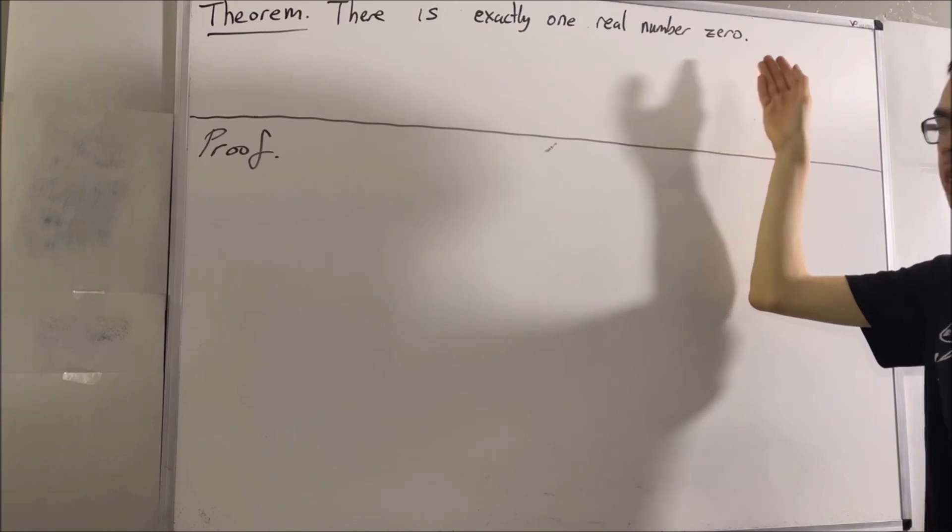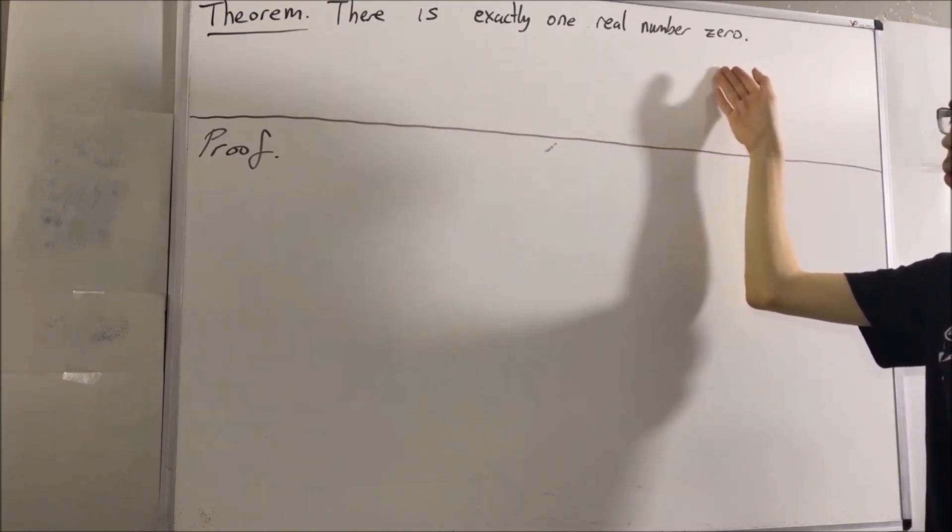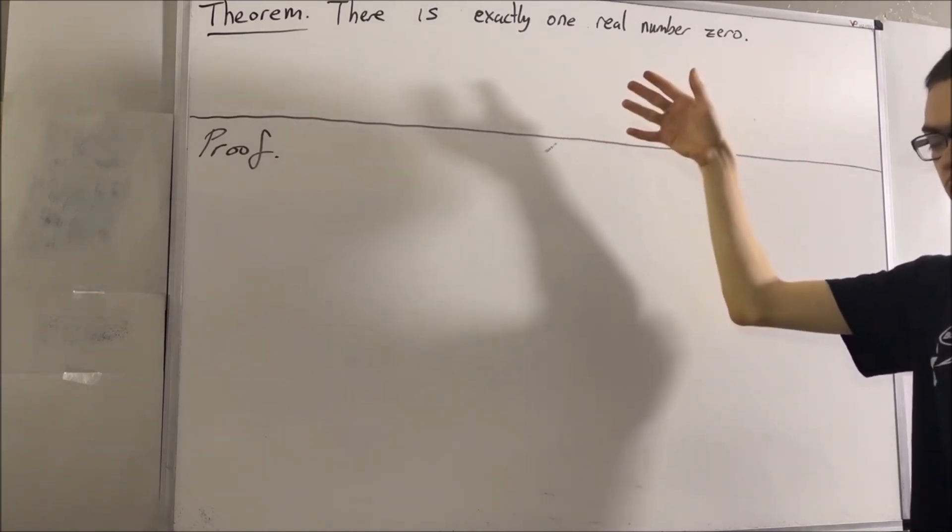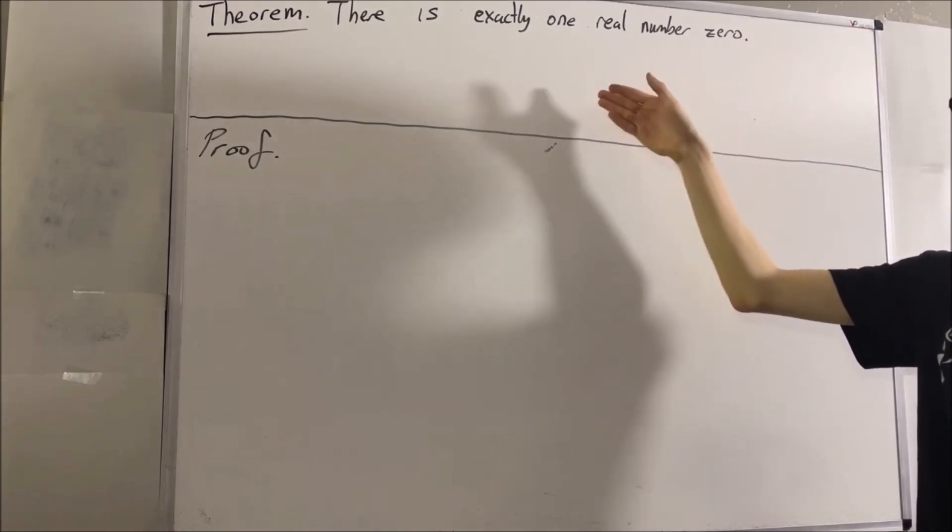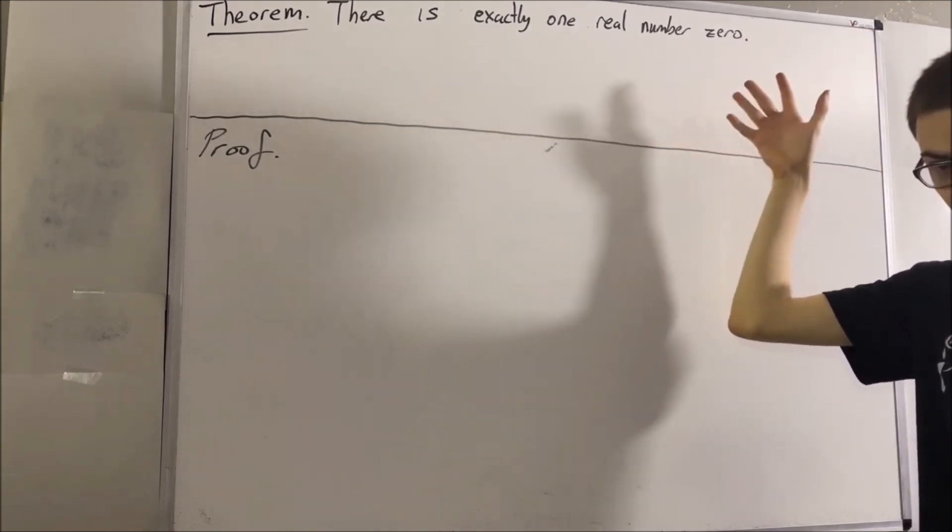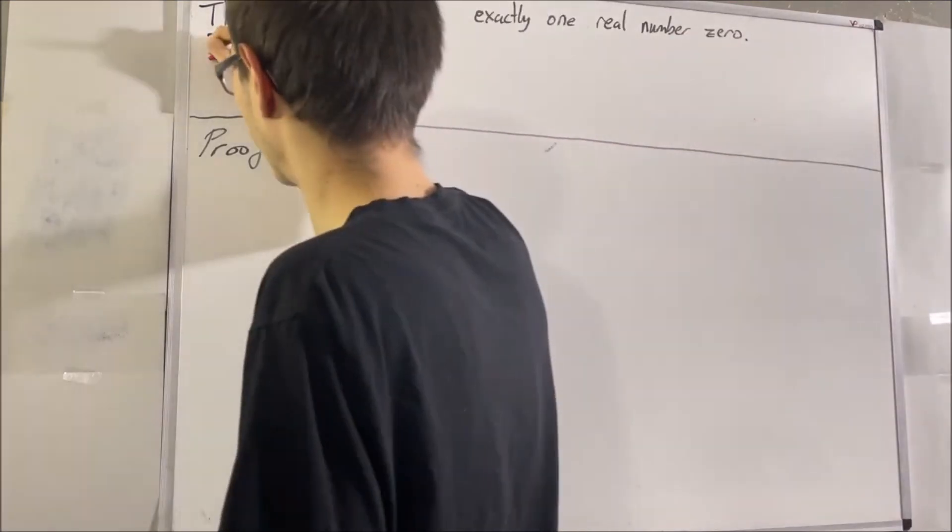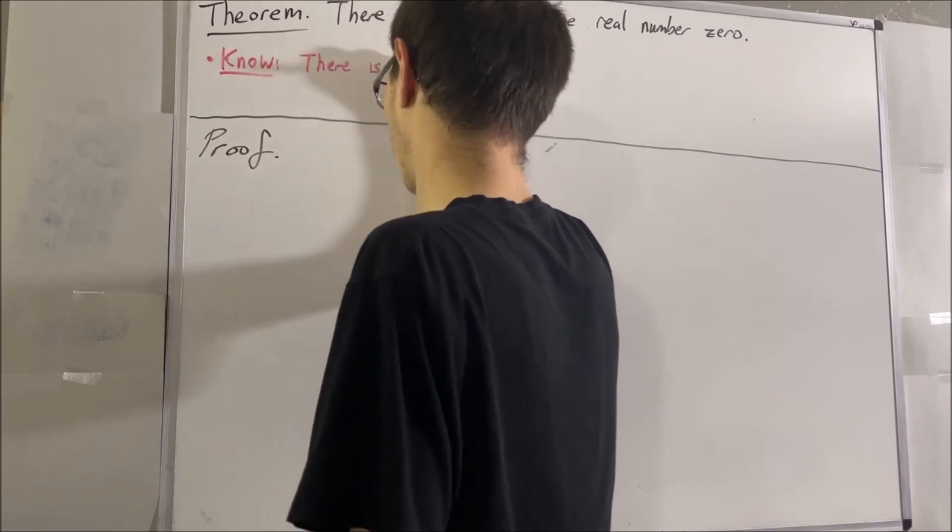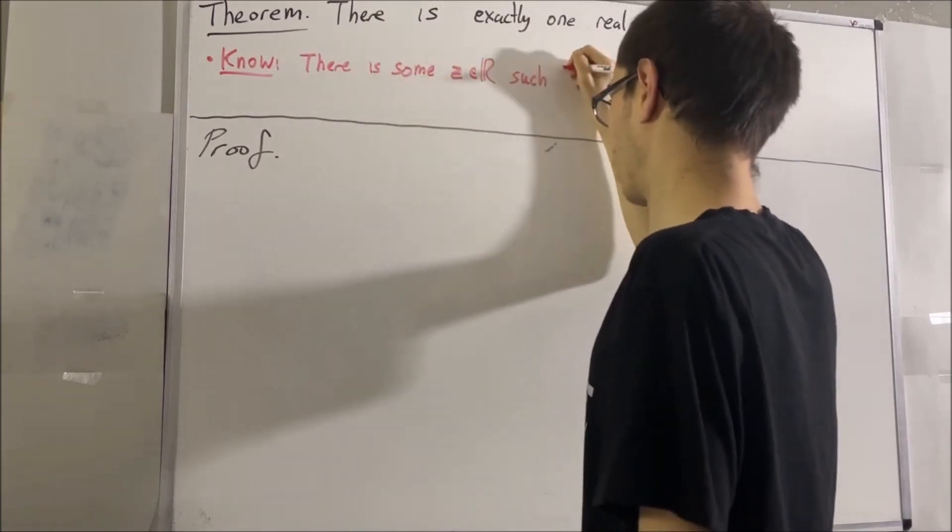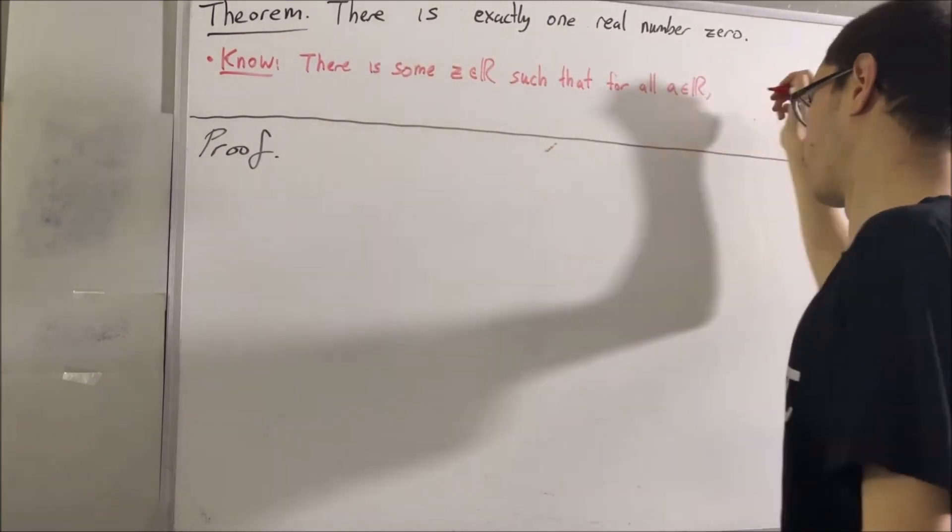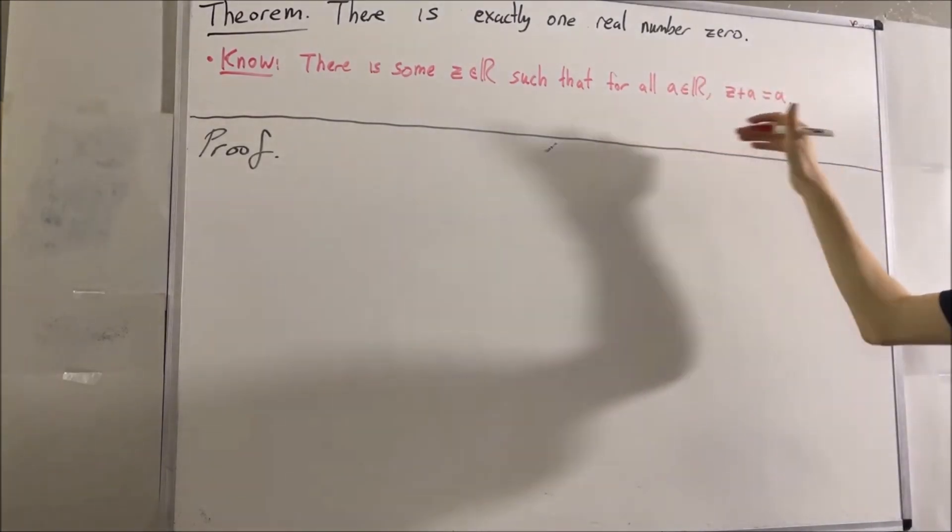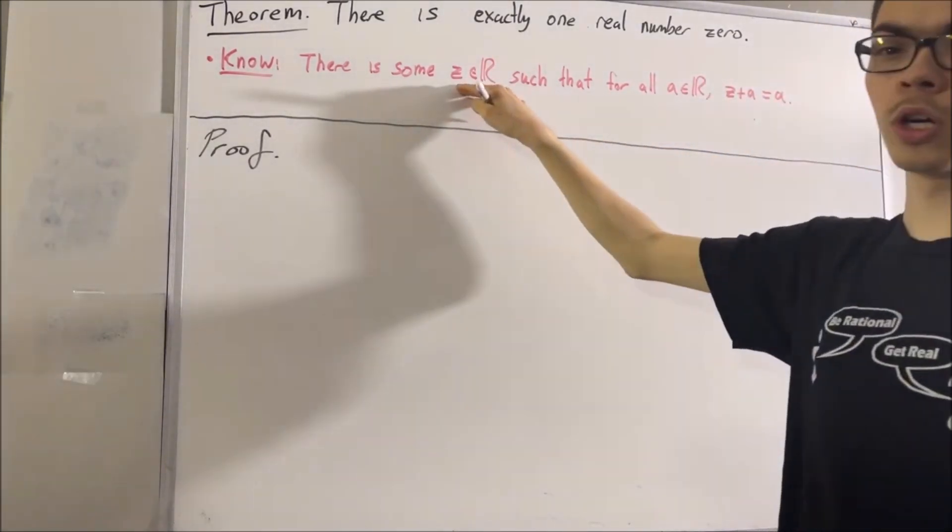Now what does the number zero mean? Well, in the field properties of the real numbers, there is some real number z such that for all real numbers a, z plus a is equal to a. So this number z is what we call a zero.